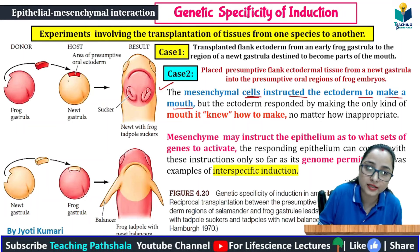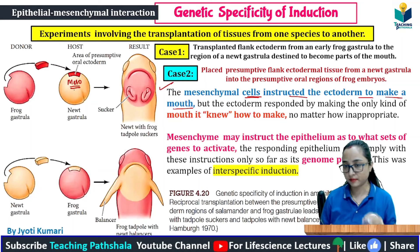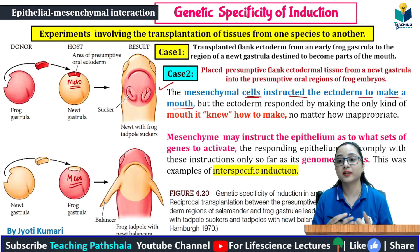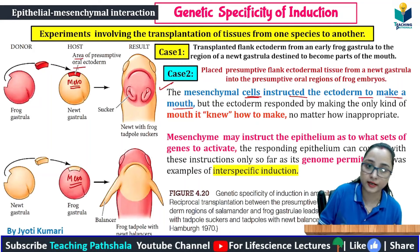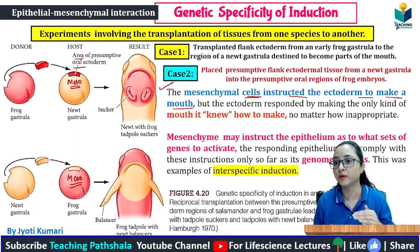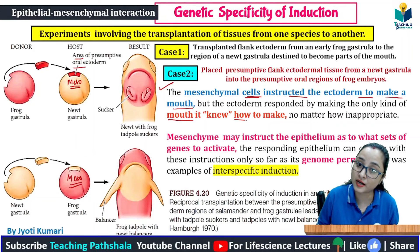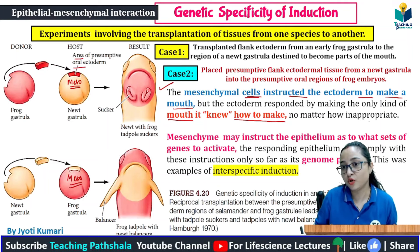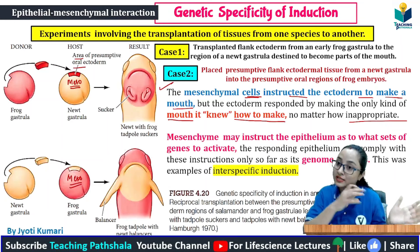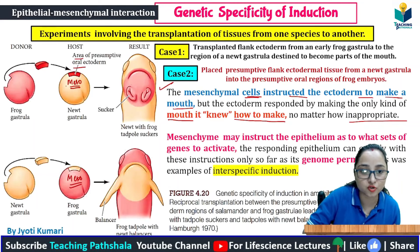The mesenchymal cell instructs the ectoderm to make a mouth. The transplanted tissue is under the mesenchymal tissues. The mesenchymal cells instruct the ectoderm to make a mouth — meaning: you make a mouth. But which ectoderm is transplanted here? The ectoderm is the one that successfully responds to this instruction.